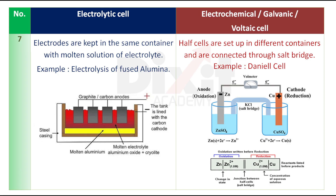Example: electrolysis of fused alumina. In an electrochemical cell, half cells are set up in different containers and are connected through a salt bridge or porous partition. Example: in a Daniel cell, the zinc half cell and the copper half cell are connected by a salt bridge.